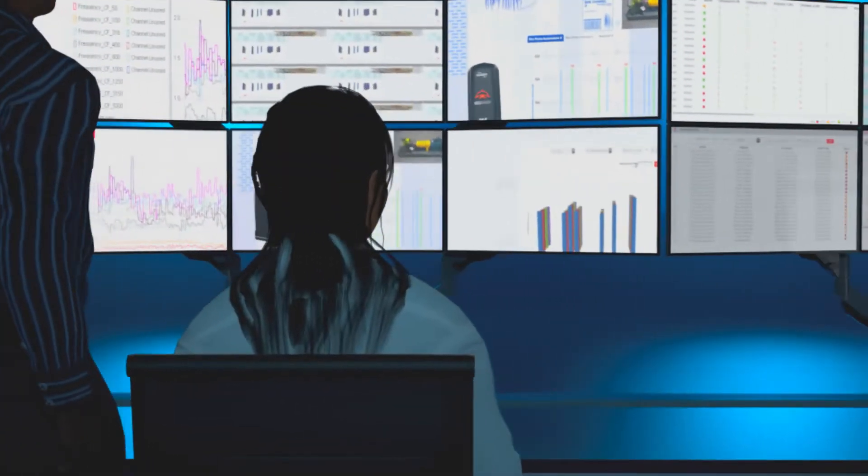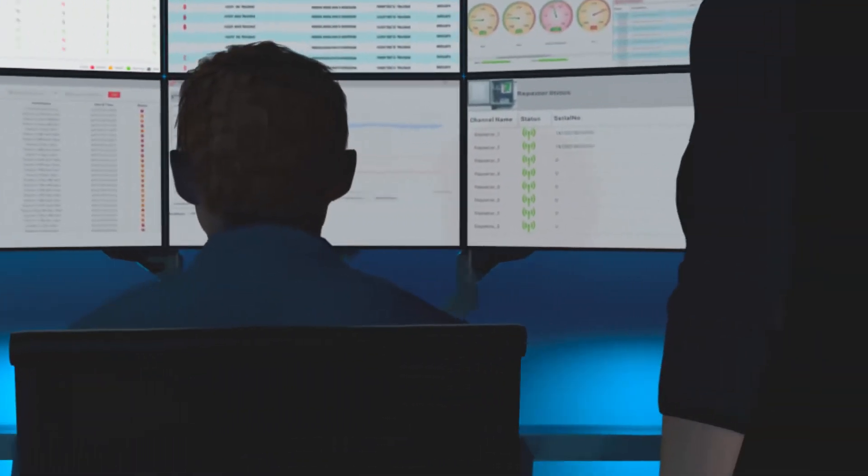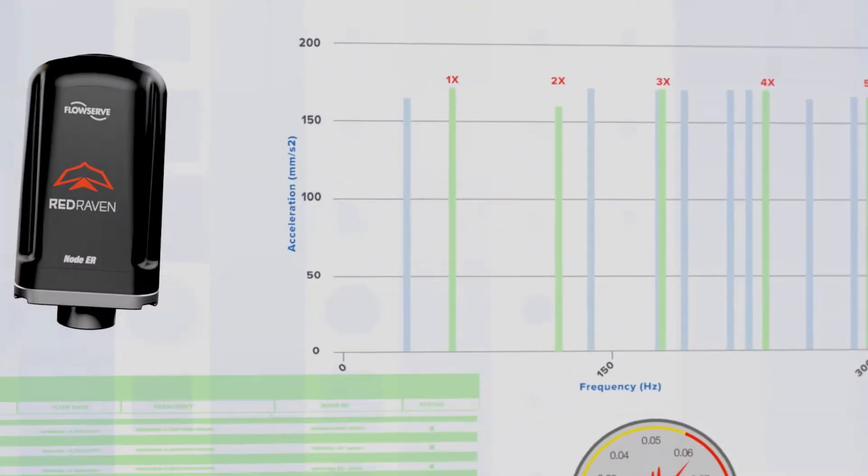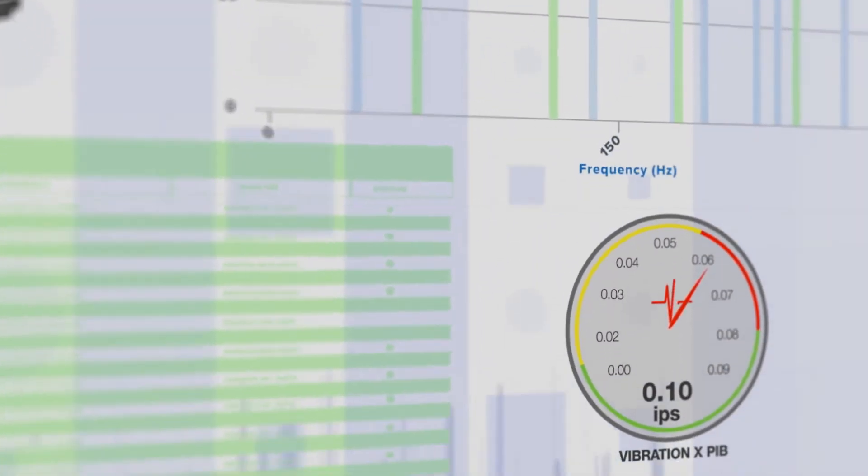FlowServe can access Node ER sensors remotely to change their transmission rates, collect data more frequently, or obtain additional information, such as compressed FFT spectrum, for a deeper analysis.